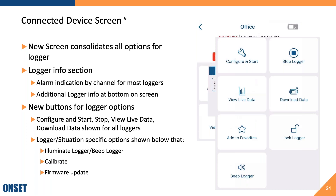In the center of this screen, you'll see new buttons for all your logger options. The top section is always filled with common logger options such as configure and start, stop logger, view live data, and download data. Below that you'll see logger-specific or situation-specific options, such as illuminate logger, beep logger, or calibrate — those appear when relevant to the type of logger you've connected to. You'll also occasionally see an option for updating your firmware, which is only visible when a firmware update is available, appearing at the bottom of the options list.